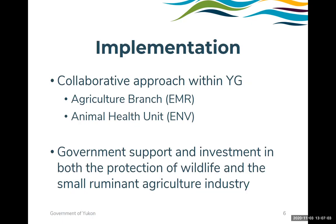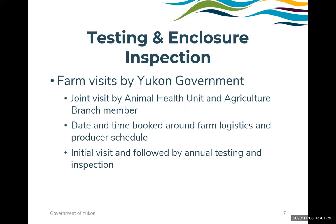The Agriculture Branch has been largely responsible for guiding the containment side of our two-pronged approach. Our two units — the Agriculture Branch and the Animal Health Unit — have worked very closely together on implementation. That is driven by a recognized need for government to support and invest both in the protection of wildlife and in the small ruminant and agriculture industry. Testing and enclosure inspections are scheduled so that a member from each unit can attend the farm at the same time, especially on the initial visit.